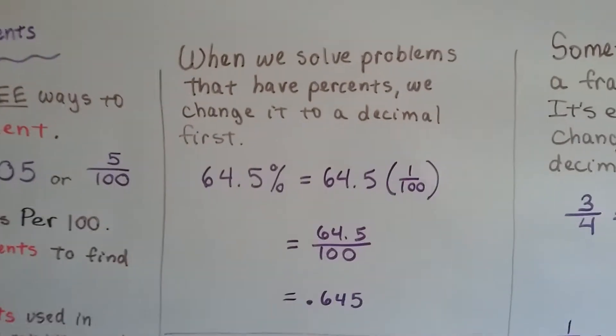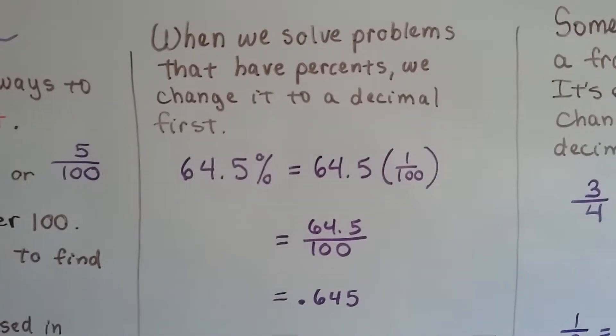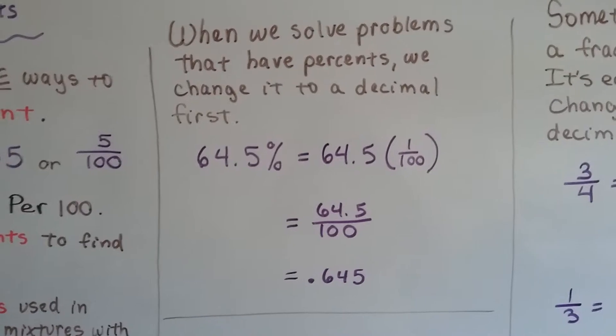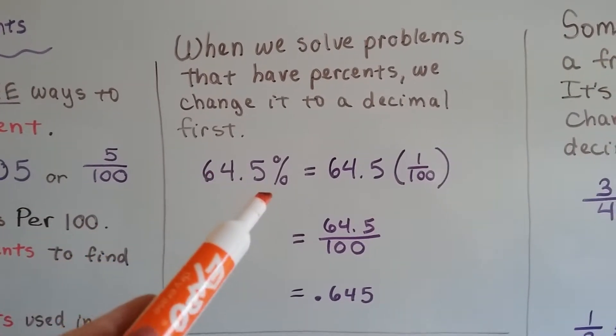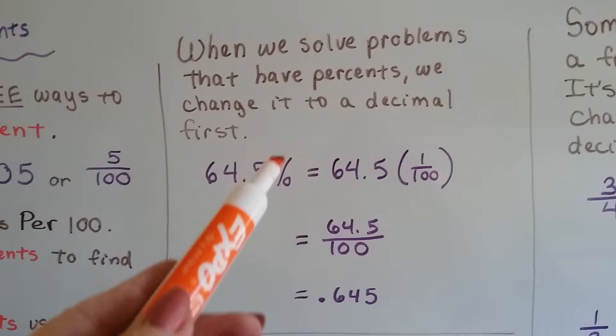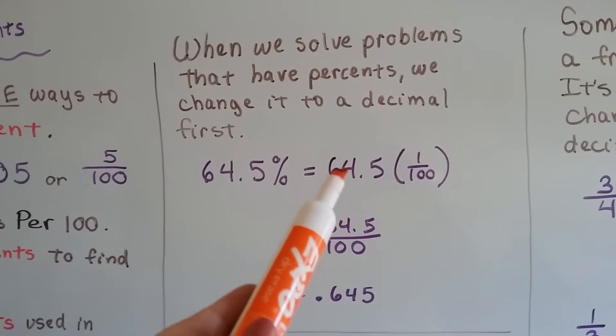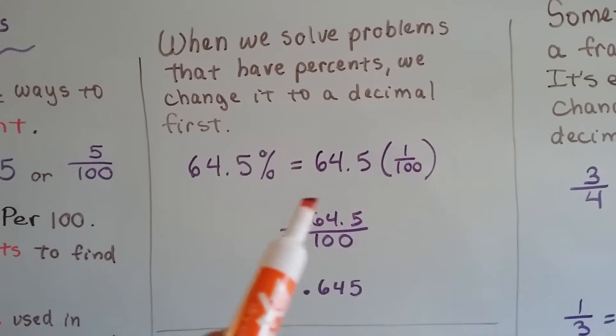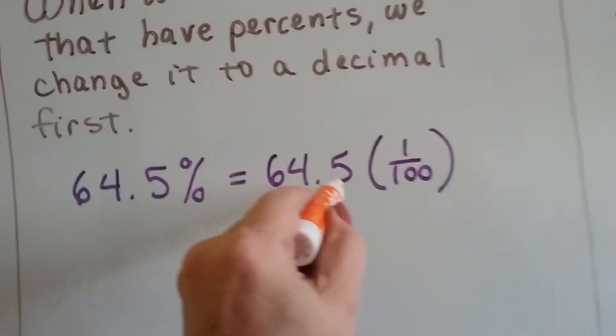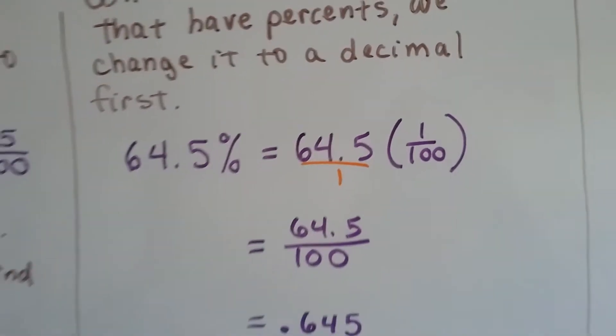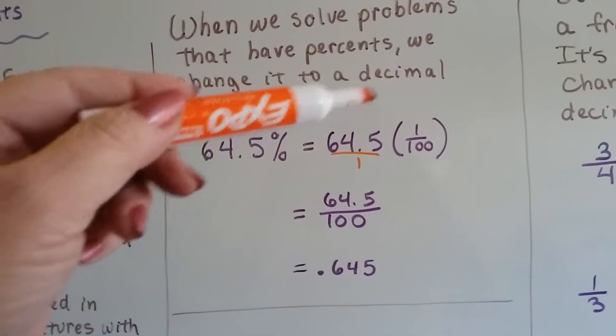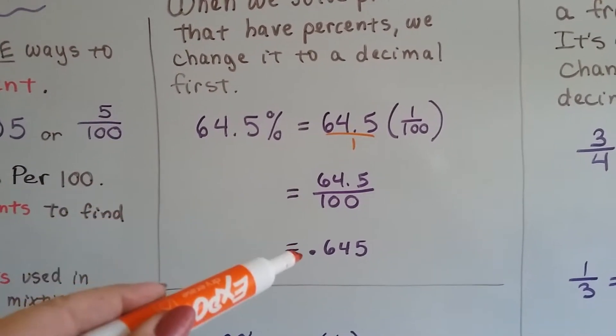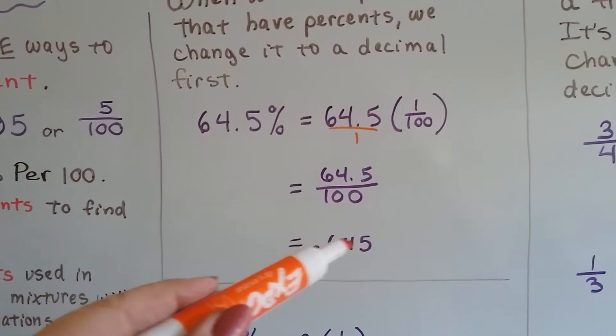When we solve problems that have percents, we change it to a decimal first. So if you see 64.5%, we change it to a decimal by taking this percentage sign off. And it's 64.5 times one hundredth. We can write this over a one, and we can see it's 64.5 over 100. That means it's 0.645.